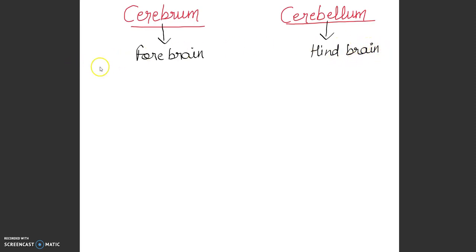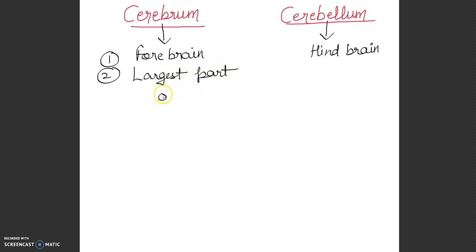Cerebrum is the largest part of the brain — you can write this as an important point. It covers most of the head region. Cerebellum is a comparatively smaller part, present just above the back of the neck.